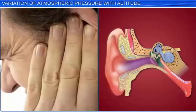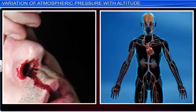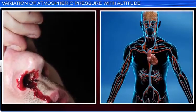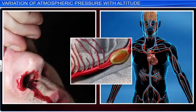As air pressure decreases in hilly areas, we can feel our ears pop, which happens in order to balance the pressure inside and outside our body. The decrease in air pressure may cause the nose to bleed, especially if the individual has high blood pressure. This is because the air pressure cannot completely counterbalance the blood pressure, causing the blood vessels in the nose to rupture. That is why doctors advise blood pressure patients to avoid going to hill stations.